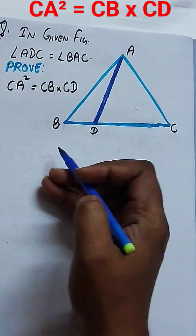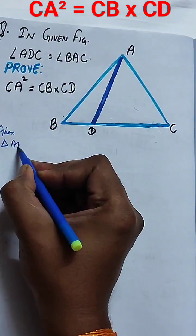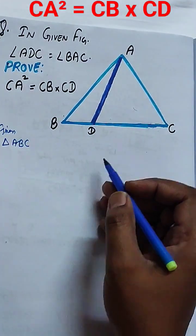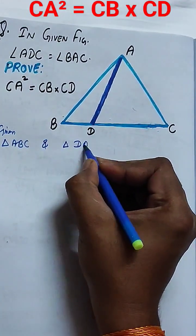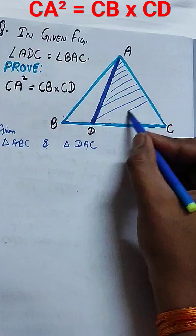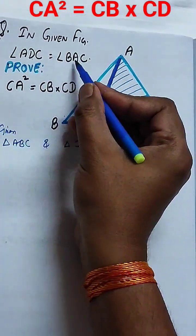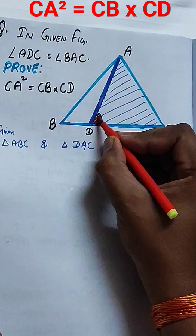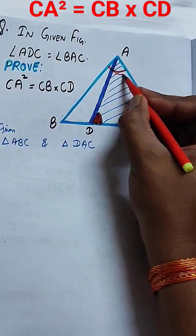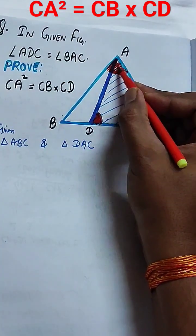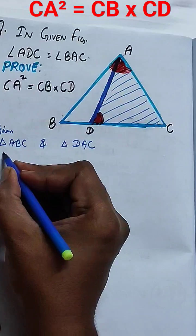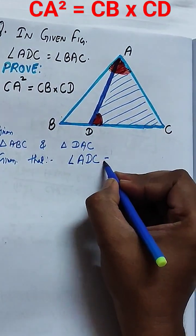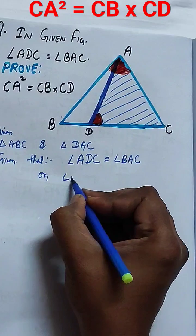This is a question of similarity where triangle ABC is given with the condition that angle ADC is equal to angle BAC. This condition is already given. So we have two triangles: triangle ABC and triangle DAC, with angle ADC and angle BAC given as equal, which I have marked in red.